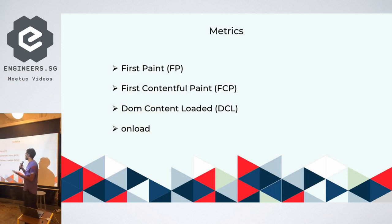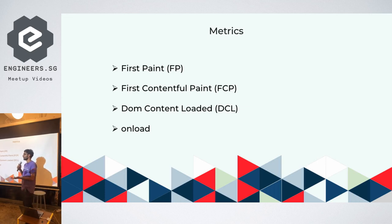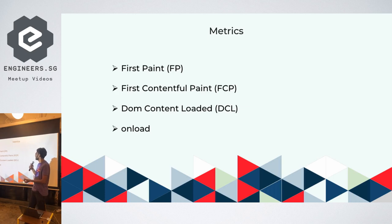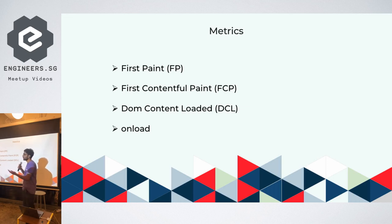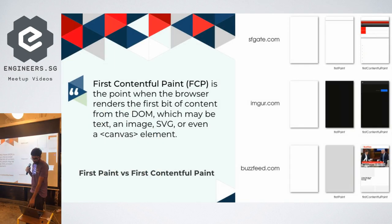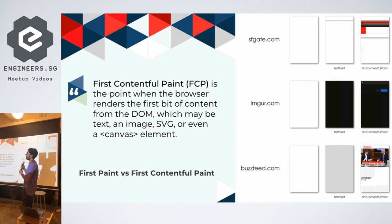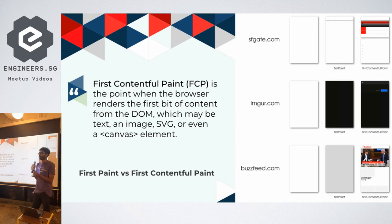The Chrome User Experience Report currently provides four metrics: Time to First Paint, Time to First Contentful Paint, DOM Content Loaded, and OnLoad — the time for the browser to fire the page load event. Let me briefly explain the difference between First Paint and First Contentful Paint.